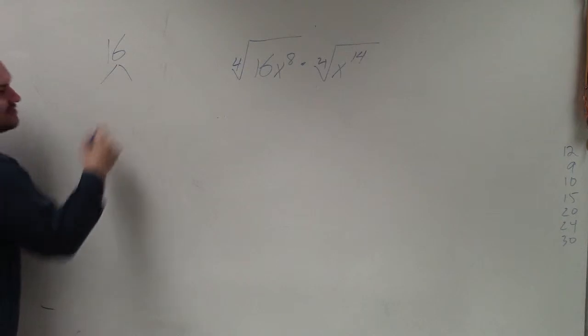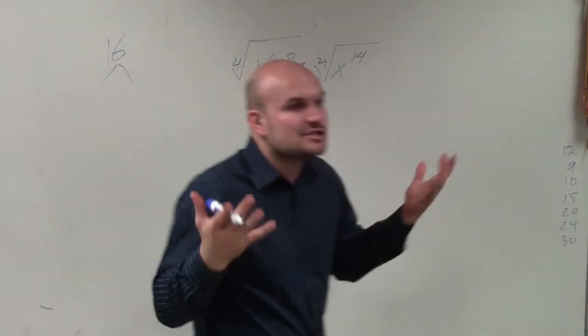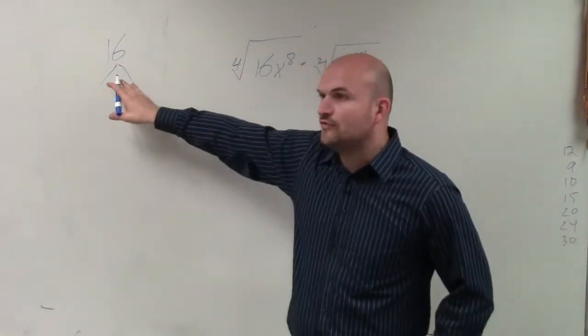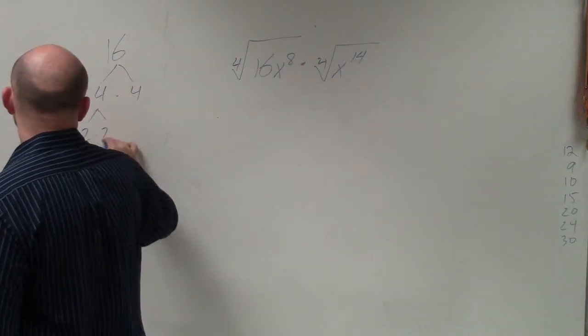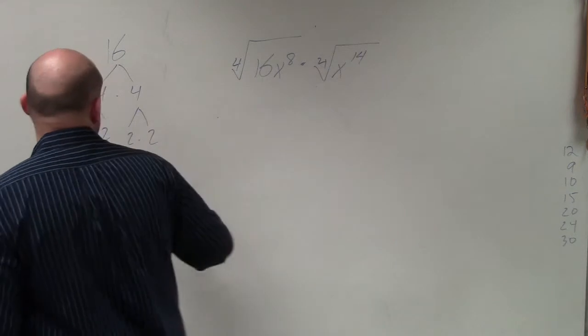So the best thing to do, even if you're not understanding anything, is create a factor tree for your number. So I have 16. I can do 4 times 4. I could break that down into 2 times 2 times 2 times 2.